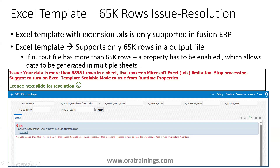You will face an issue saying your data is more than 65,531 rows in a sheet, which exceeds Microsoft Excel's limitation. It will suggest turning on Excel template scalable mode by setting it to true from runtime properties. The assumption here is: you have designed a BIP report with an Excel template having an XLS output, and the output generated is more than 65,000 rows.